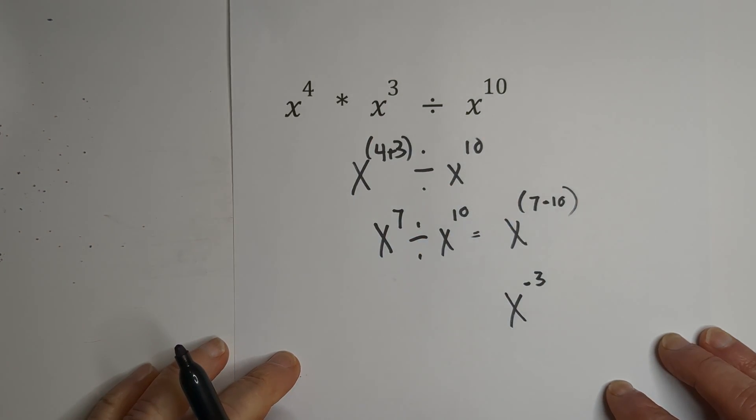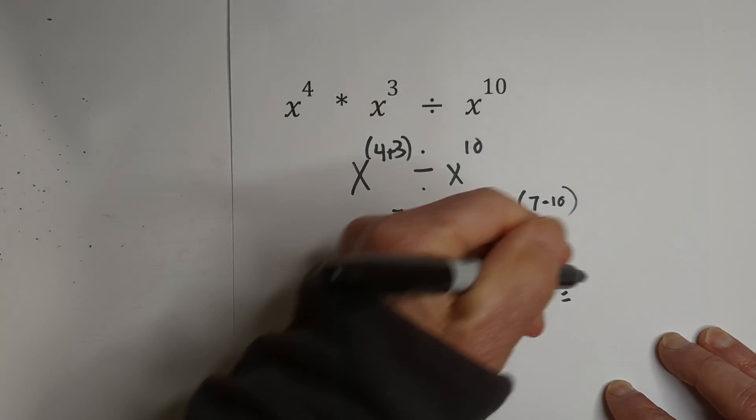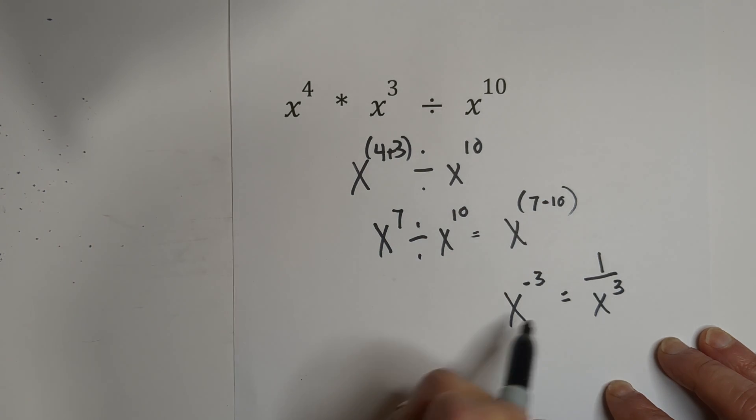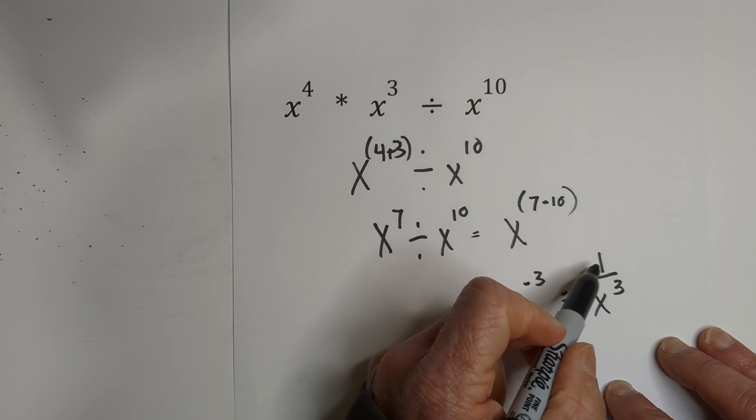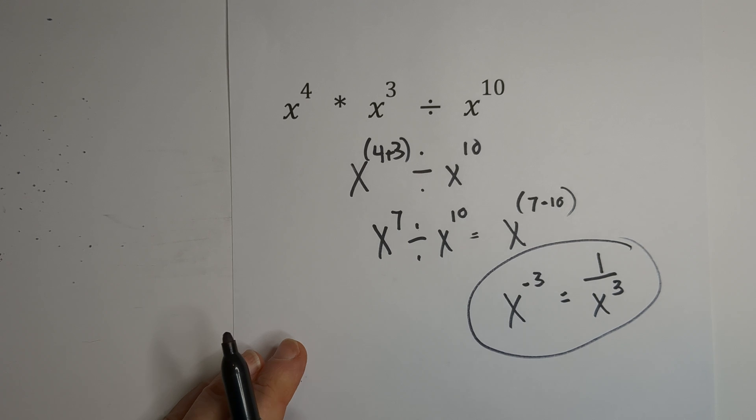So now what we're going to do is we're going to subtract. So that gives us X negative 3. But you need your answer positive. So in order to convert it to positive, we are just going to place it over 1. And therefore, the X to the negative 3 in a positive format is 1 over X cubed. So that's that simplified.